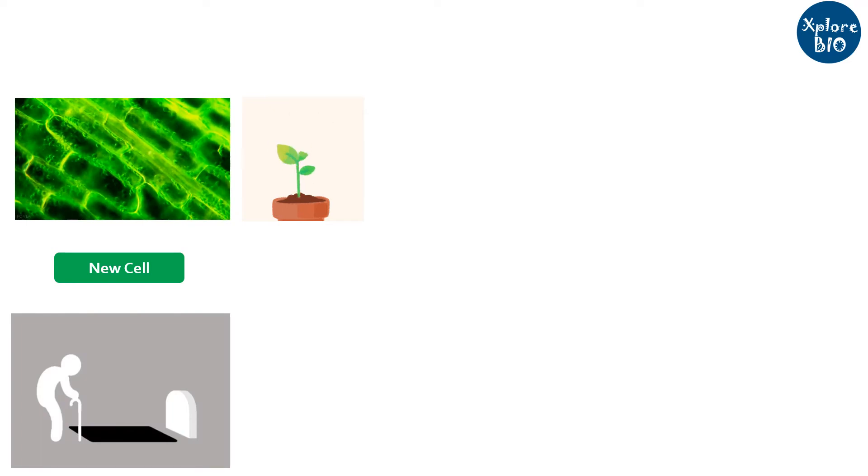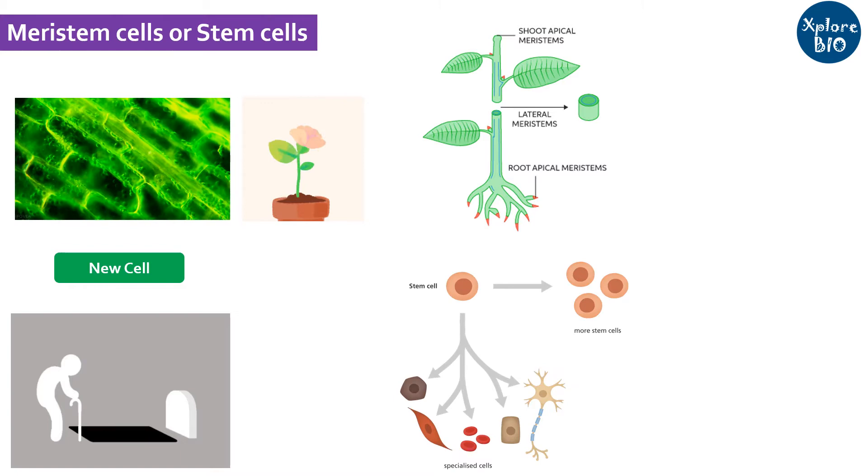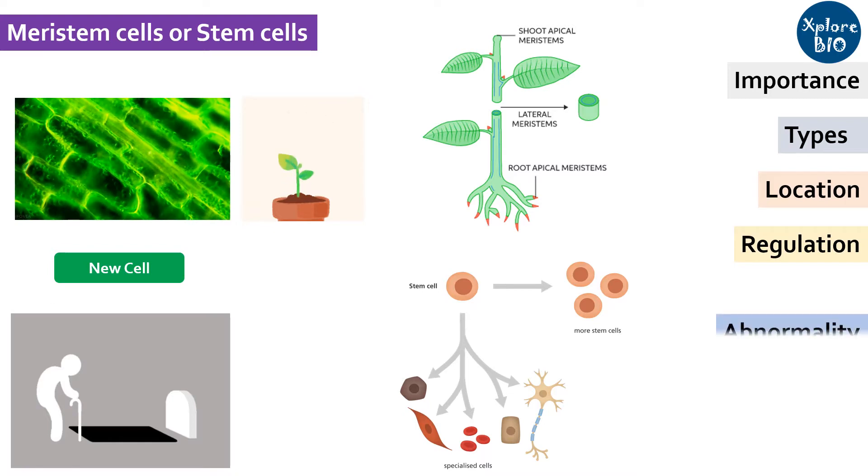So in today's video we will learn about a unique type of cells called meristematic cells or stem cells. What is their importance in organism's growth and development? You will see various types of meristems and where they are located. Next we will see what factors regulate meristem and what happens when meristem dies or cell division gets uncontrolled. We will have a look at some wonderful examples in plant and animal kingdom that will make you understand the concept better. At last we will also see some of the useful applications of meristems in plants and humans. So let's begin.